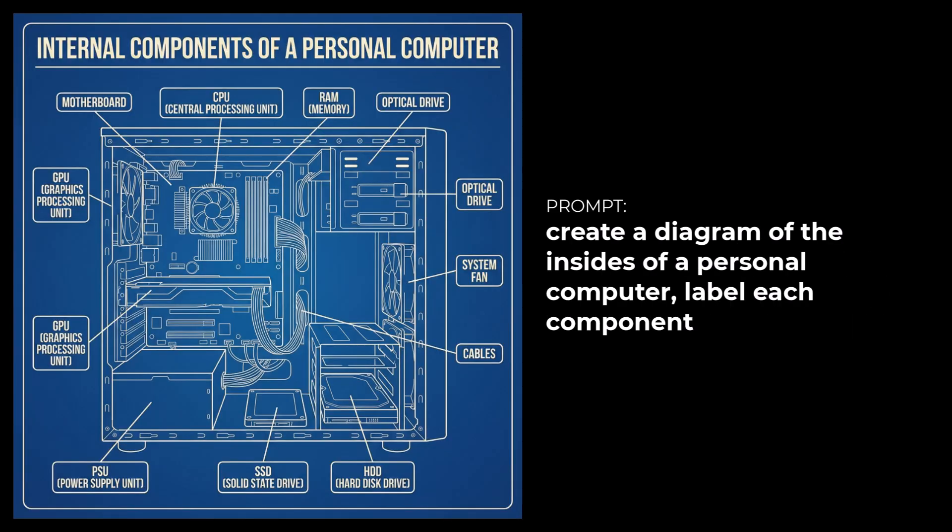On top of that, I asked it to create a diagram of the insides of a personal computer and label each component. If you have a close look, it has labeled everything accurately — everything's in the right spot. It has both the information and the visual, which just blew me away. So now you can save time not only with image creation but also with content when the time calls for it.